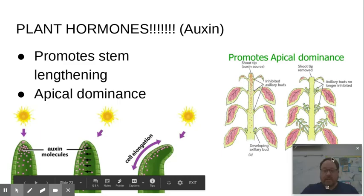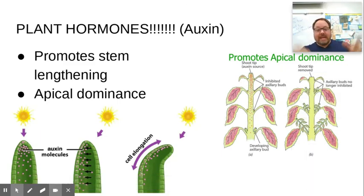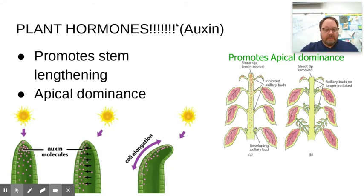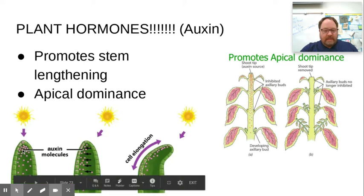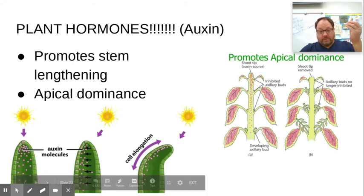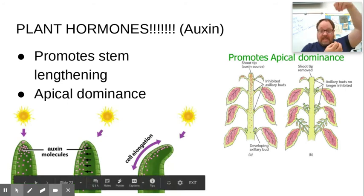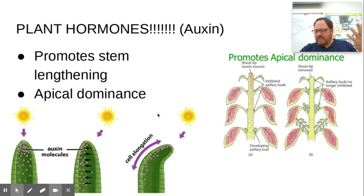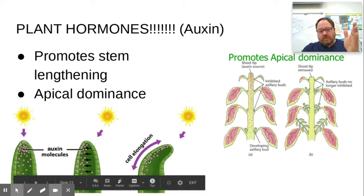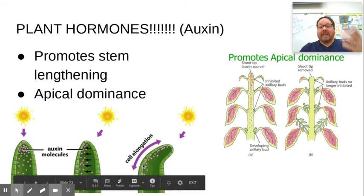Now we look at hormones in plants. The first is auxin, which causes plant cells to divide and stems to elongate. At the apical meristem — the tip of the growing plant — there is a high concentration of auxin that drives cell division and lengthens the stem. When the sun is at an angle, auxin concentrates on the side of the plant away from the sun, stimulating cell division on that shaded side, so the plant bends toward the sun.